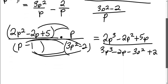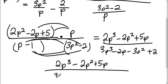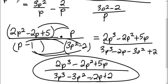So the only last thing I need to do is just get this in order, because it's kind of out of order. We can't combine anything. So I get 2p to the third minus 2p squared plus 5p all over 3p to the third minus 3p squared minus 2p plus 2. And there's my final answer.